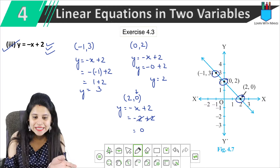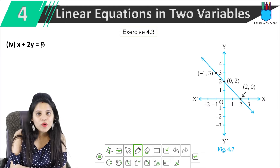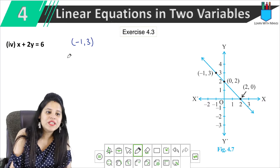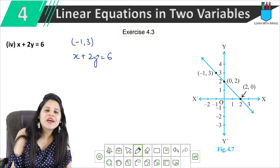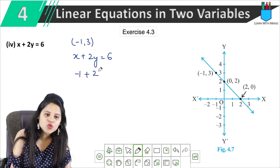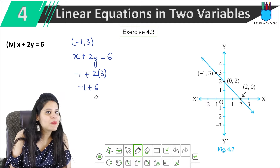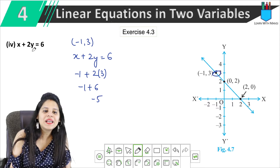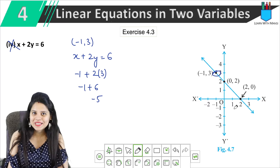I hope the question is clear. Now the fourth option is x plus 2y equals to 6. Taking the first point (-1, 3): minus 1 plus 2 times 3 equals minus 1 plus 6, which is 5. Since 5 is not equal to 6, the first point is not satisfied, so this graph is not x plus 2y equals to 6.